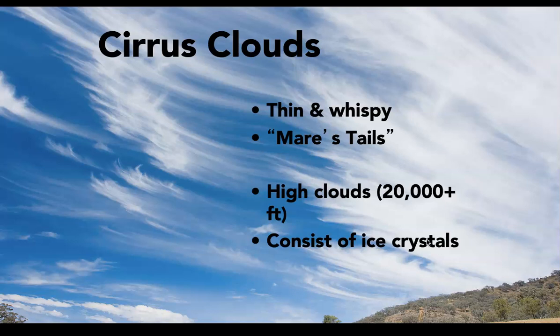First, the cirrus clouds. Thin and wispy, these high clouds are often referred to as mare's tails. You can see they kind of look like a horse's tail — real fine, long strands. These are ice crystals, and that's part of the reason you can see such definition in them. Generally speaking, these are nice day clouds.